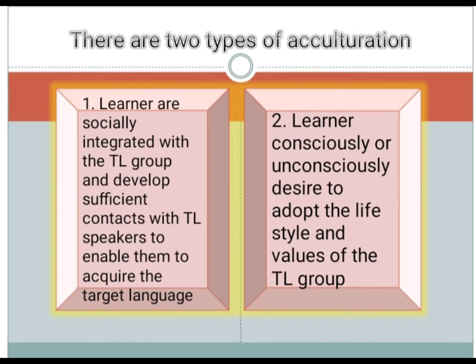There are two types of acculturation. The first is when learners are socially integrated with the target language group and develop sufficient contacts with TL speakers to enable them to acquire the target language. The second is when learners consciously or unconsciously desire to adopt the lifestyle and values of the TL group. Both types are important to provoke acquisition of the target language.